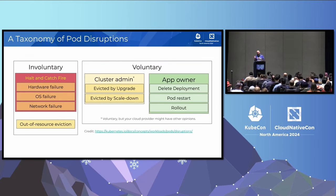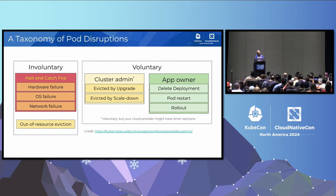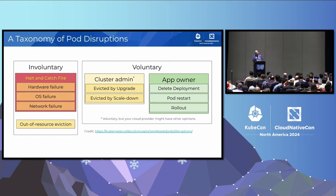In the voluntary category are various app owner disruptions: you have a rollout, you delete the deployment, you restart the deployment, etc. And in the middle there's an interesting category that's voluntary, but it really depends on your provider as to how voluntary it is. That includes cluster administrative actions — anything that incurs a node drain, such as eviction by upgrade, scale down, or node repair. We're going to spend a chunk of time talking about this category.